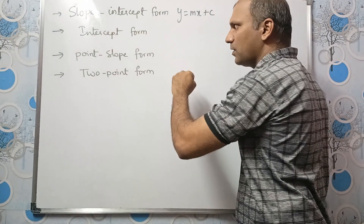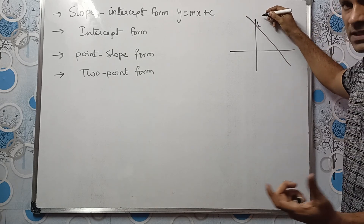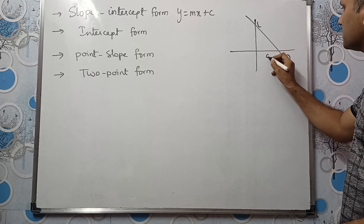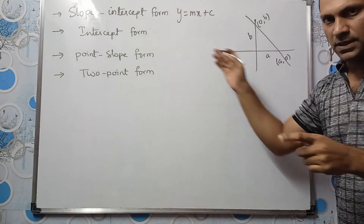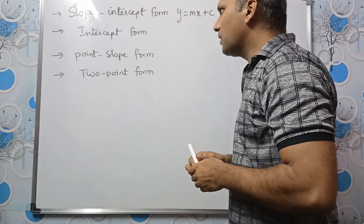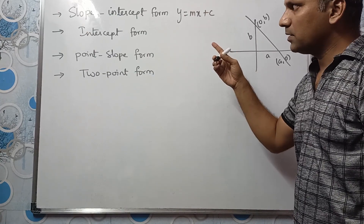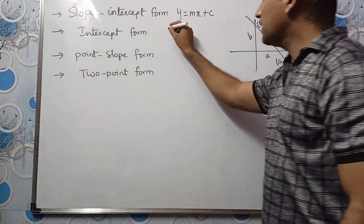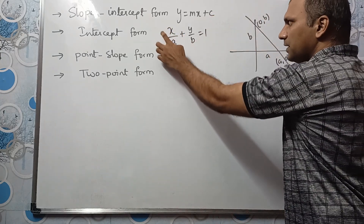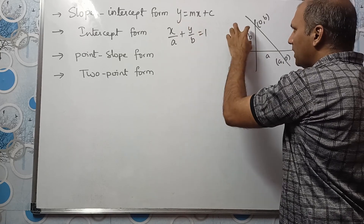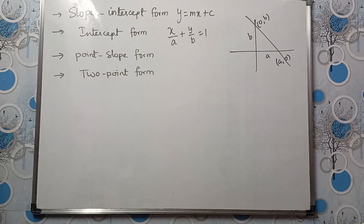Now let us study about the intercept form. Suppose we have a straight line with x-intercept a and y-intercept b. If intercepts are given, we can write the equation as x/a + y/b = 1. This is the intercept form: x divided by x-intercept plus y divided by y-intercept equals 1. Always 1 should be on the right-hand side.